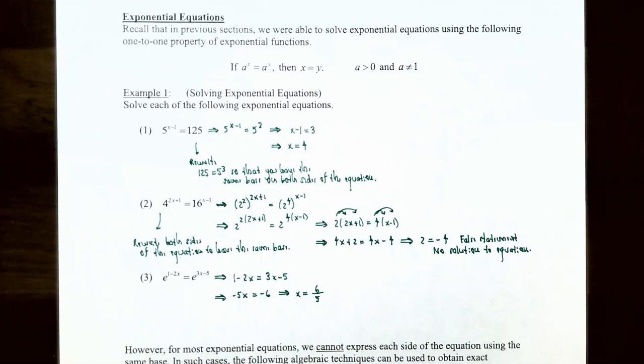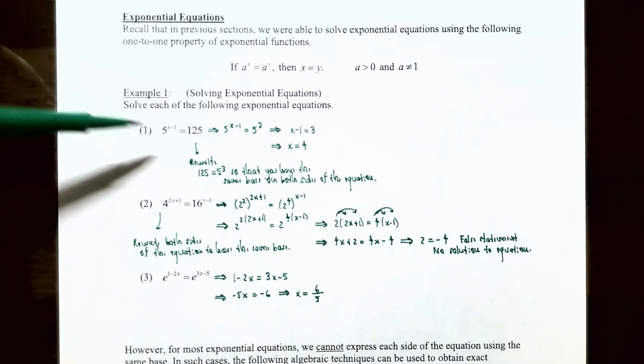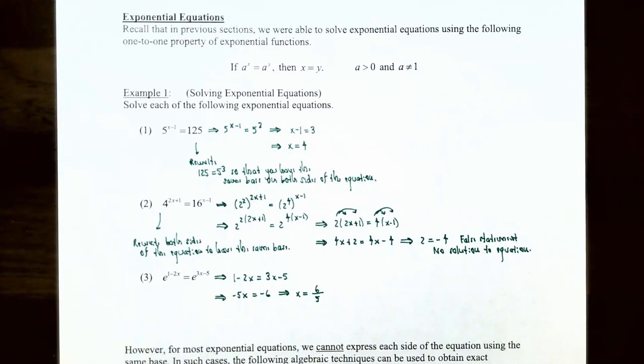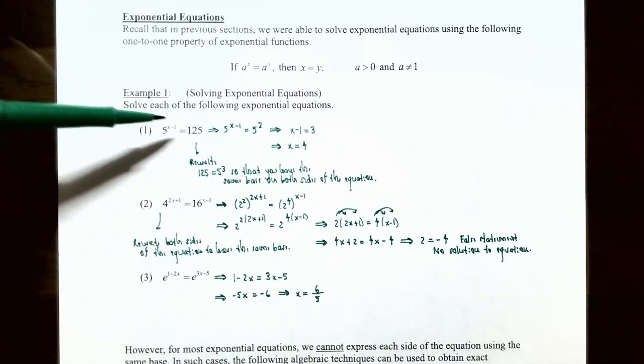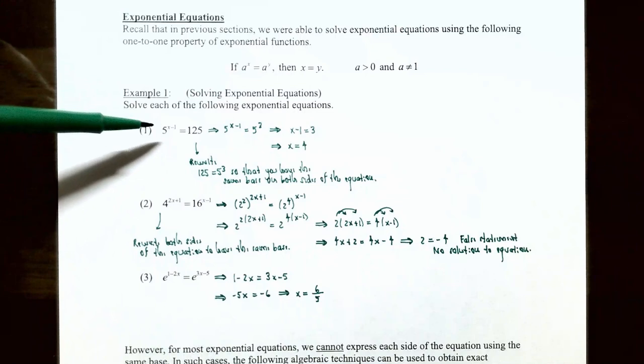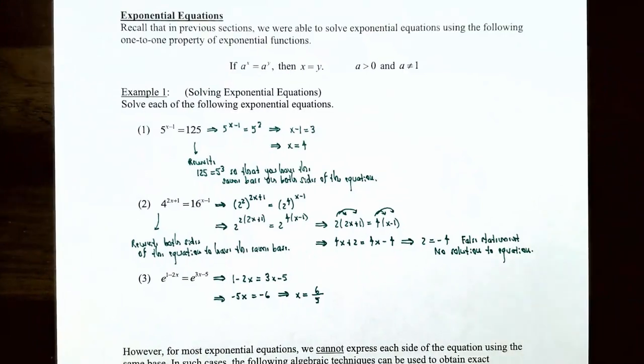If x equals four, it makes the original equation true. You have five to the four minus one exponent, which is five cubed, and that equals 125.